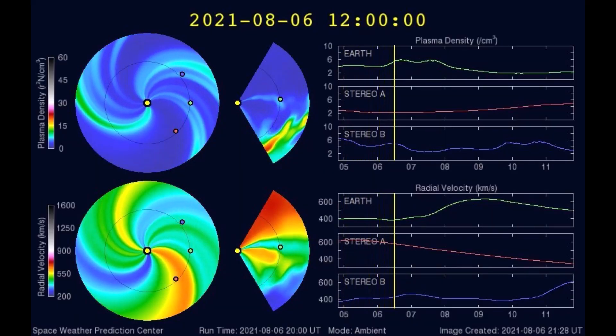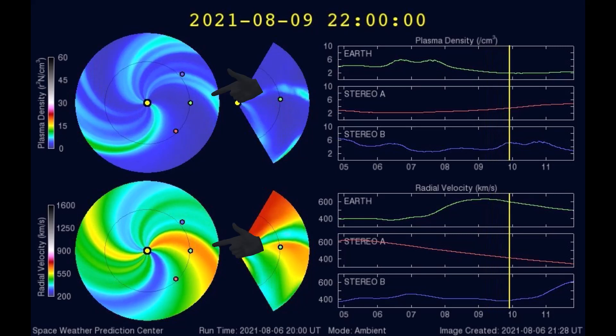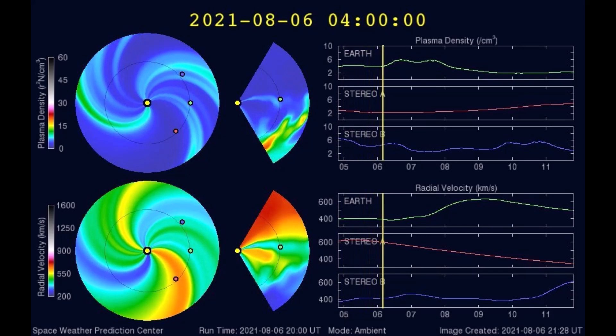This model shows the intensity of the solar wind on the Earth and the stereo satellites. These two discs show the rotation and intensity of the wind and solar radiation moving with the sun's rotation.